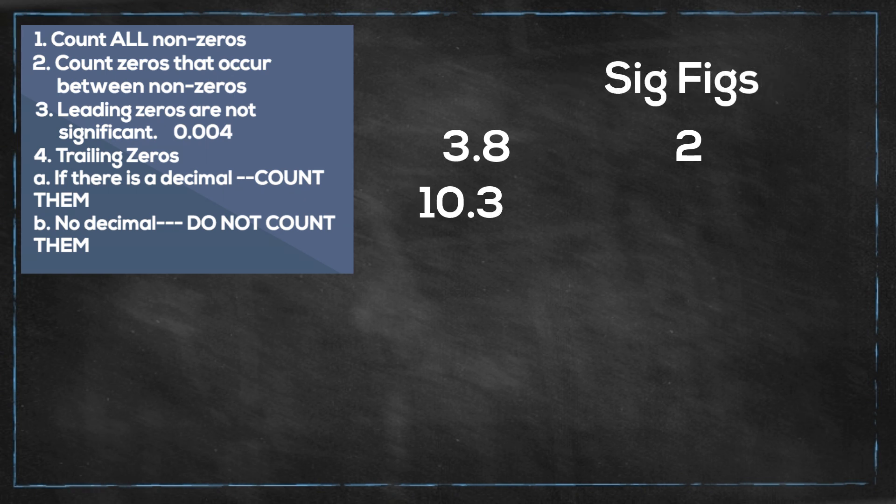10.3. What do we do with the zero? Remember if it is between non-zeros, the one and the three, then you count it. It is 3.